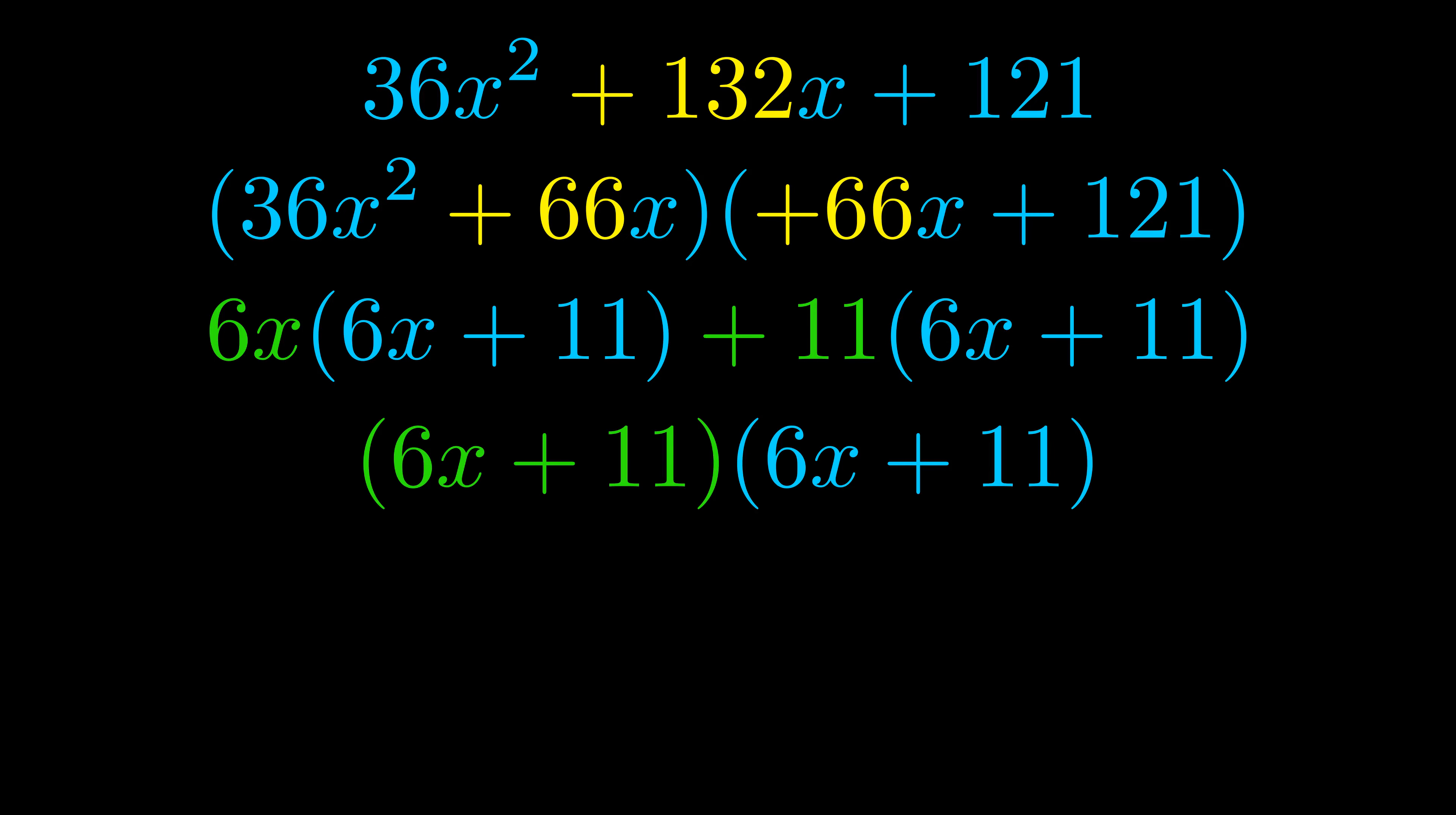The blue values are the same. Those blue values will become one of our factors and we will combine the two green values, the GCFs that we pulled out, to get the other one. And that is our fully factored equation.